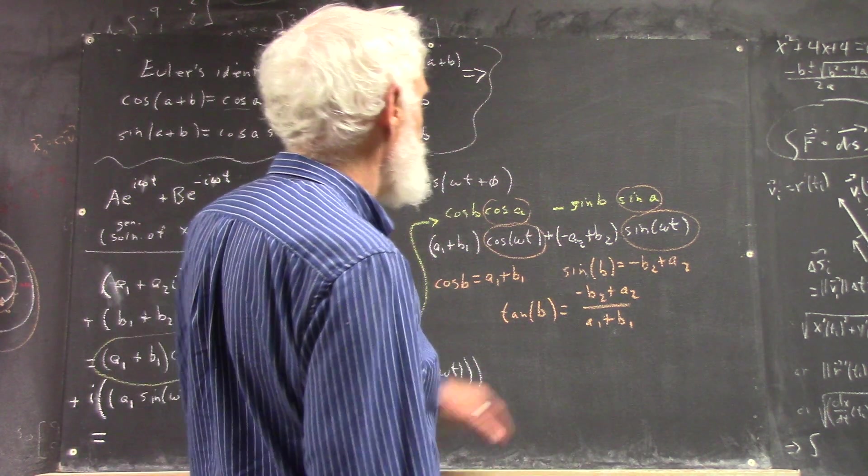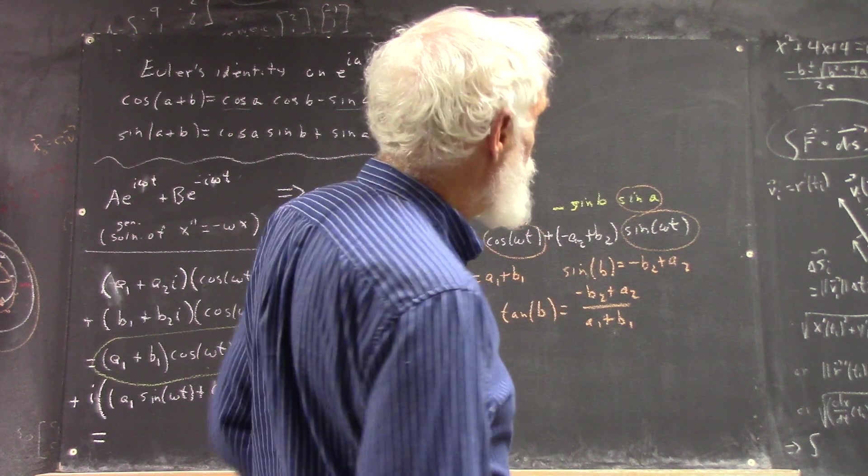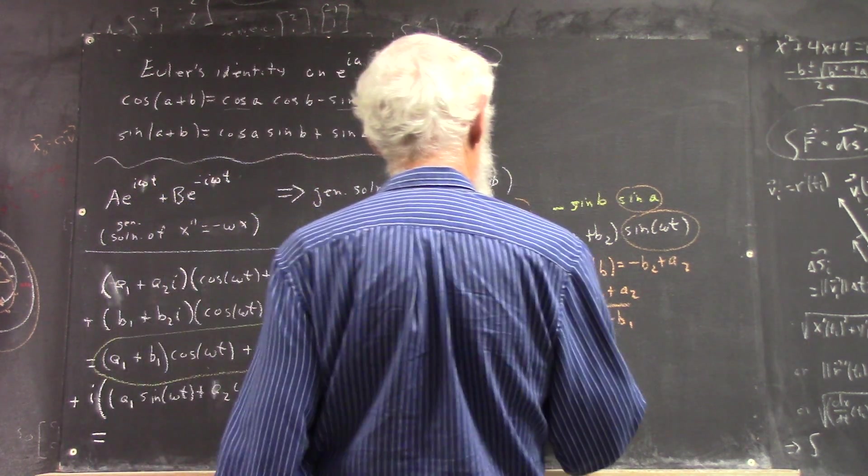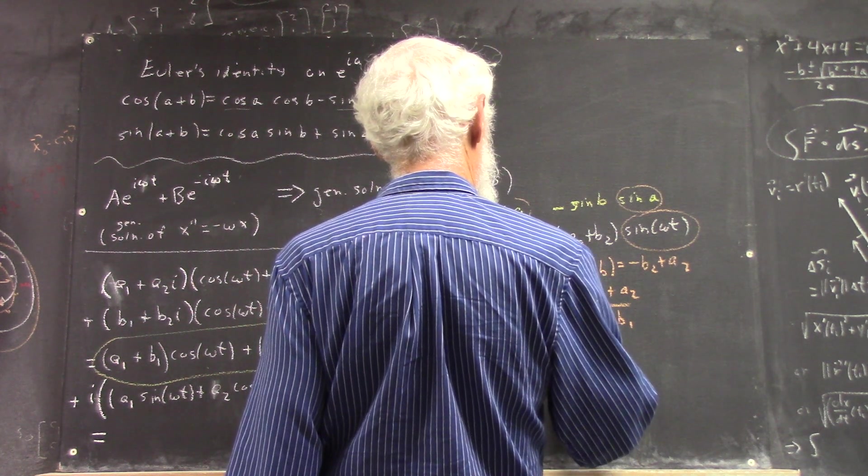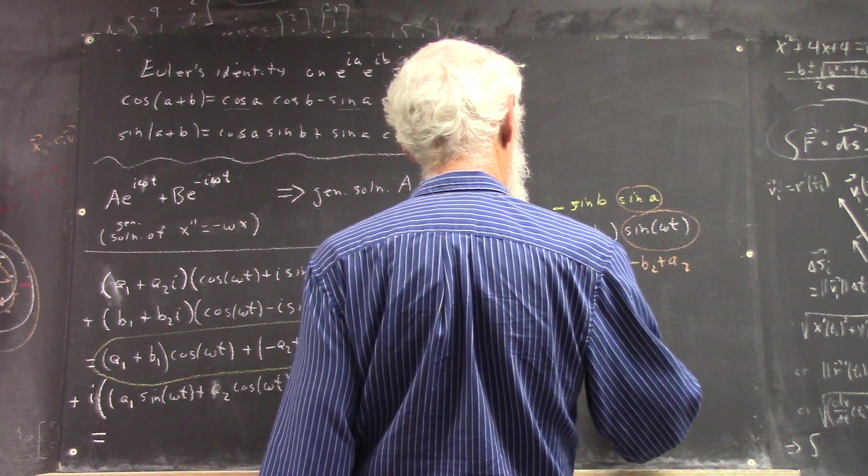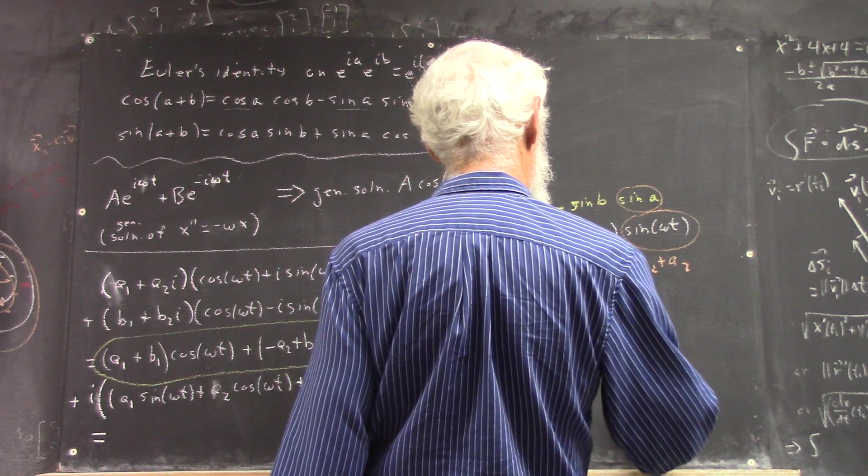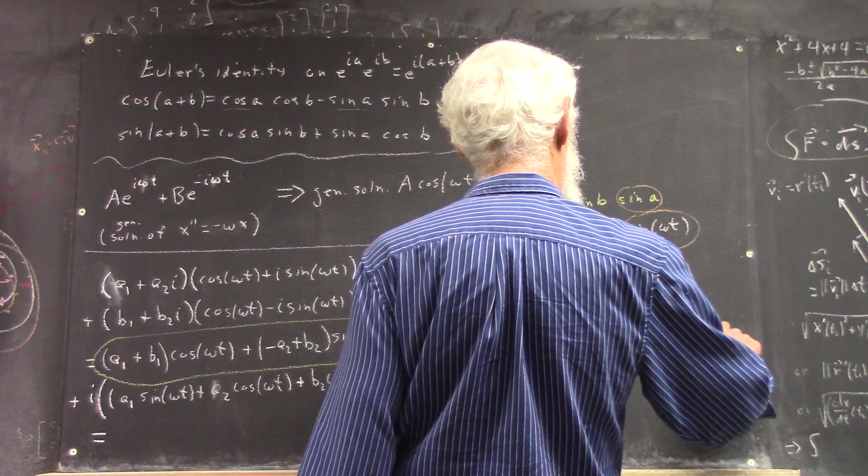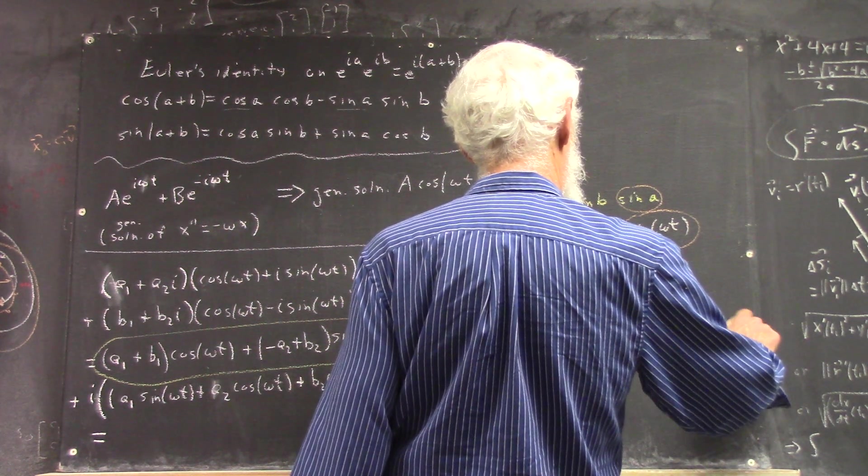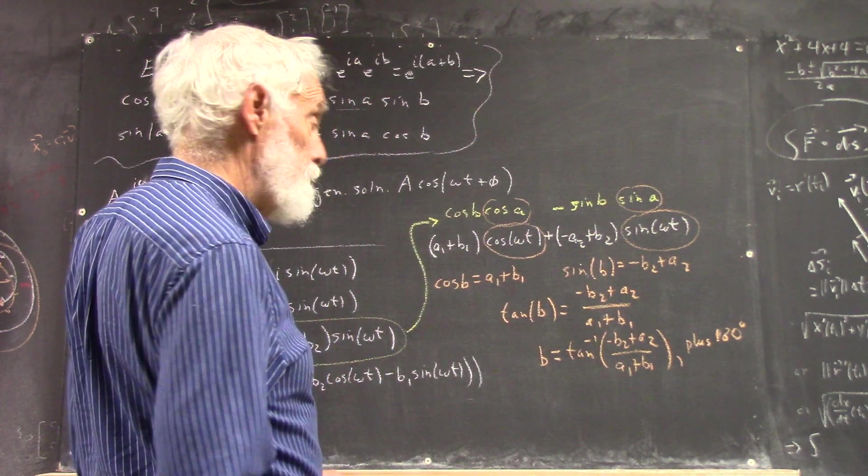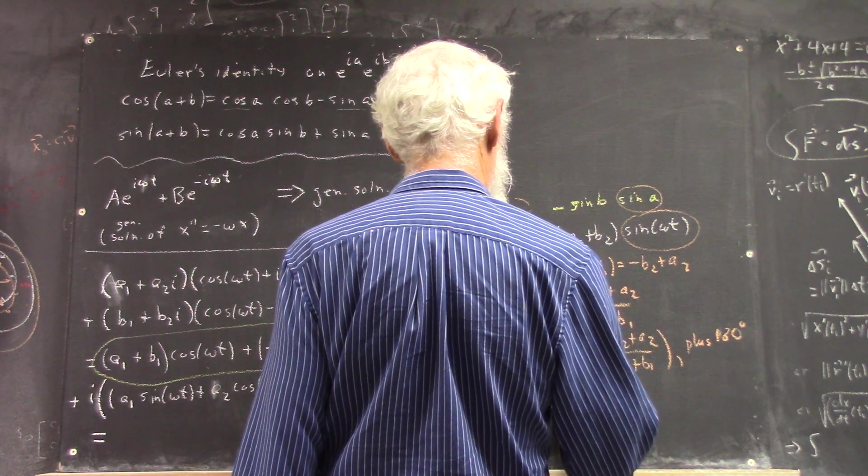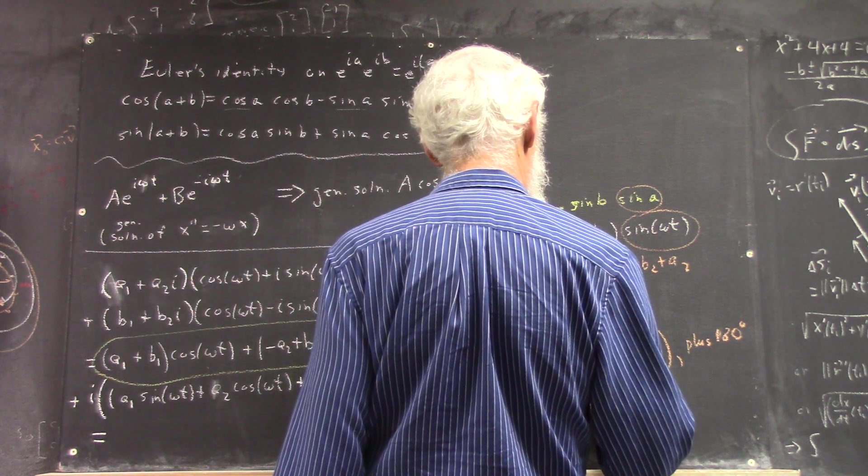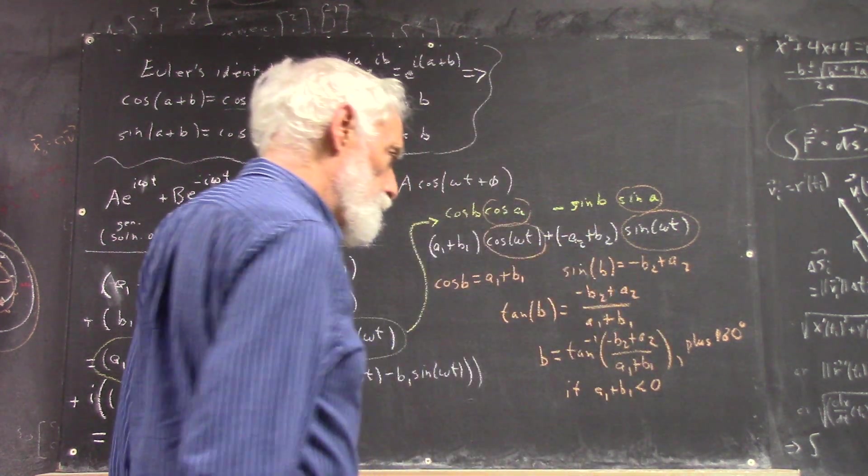So the v is an arctangent of this, or the arctangent plus 180 degrees or plus pi radians. So that's plus 180 degrees, if what? A1 plus b1 is negative.